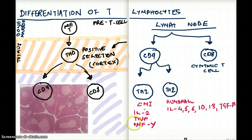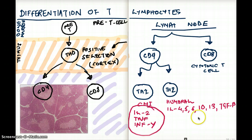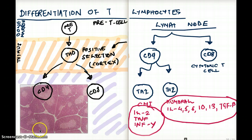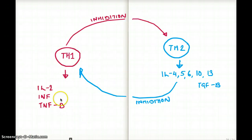There is more to this story. Whatever is made by T helper 1 is going to inhibit T helper 2 cells, and whatever is made by T helper 2 is going to inhibit T helper 1. I've rewritten T helper 1 and T helper 2 on a fresh piece of paper so it's clear: T helper 1 products inhibit T helper 2, and T helper 2 products inhibit T helper 1.